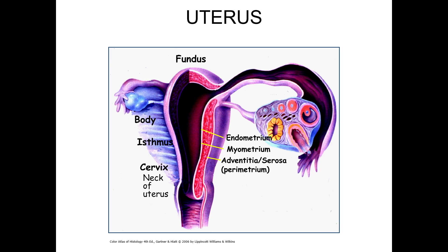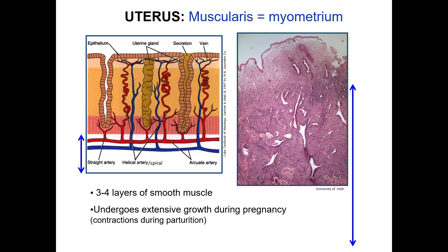The myometrium consists of several layers of smooth muscle which will undergo extensive growth during pregnancy and will contract during childbirth or parturition. The blue arrowed line here represents the thickness of the myometrium, which is not all visible in this particular H&E stain section. This layer is the site of the most common uterine tumor, the benign leiomyoma or uterine fibroid. These are smooth muscle tumors that are usually asymptomatic but can cause heavy menstrual bleeding and sometimes impair fertility. These tumors are dependent upon estrogen and progesterone, and they grow until menopause, when they will shrink due to lack of hormones. This layer also contains large arcuate arteries that give rise to the spiral and straight arteries that supply the endometrium.